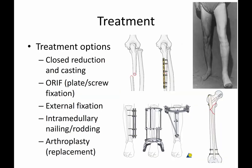Overall treatment options for fractures include closed reduction and casting — shown here as a long leg cast — and open reduction and internal fixation (ORIF), which is typically in the form of plate and screw fixation. Here you can see an ulna fracture treated with plate and screw fixation through an ORIF surgery.